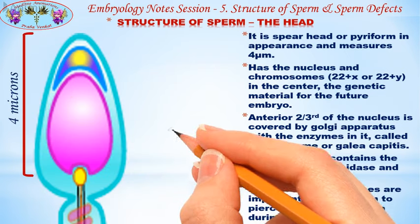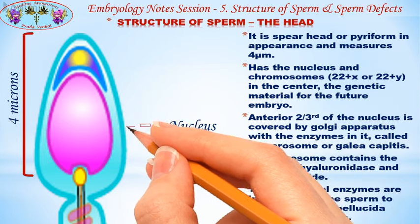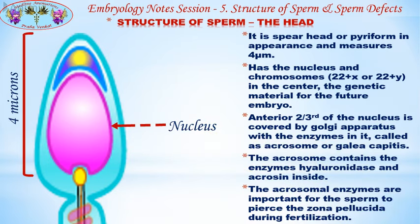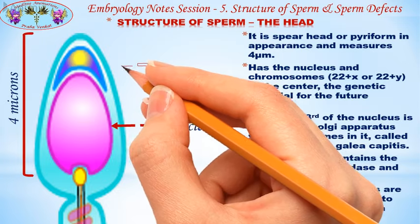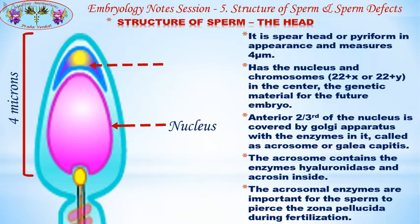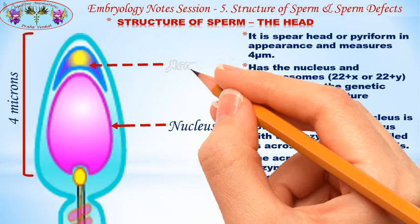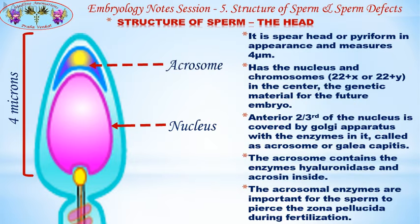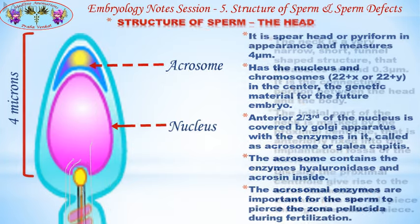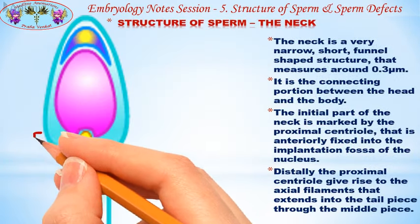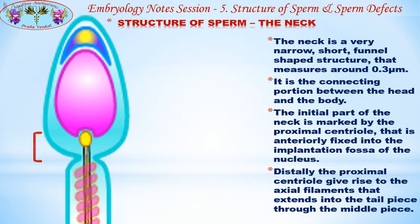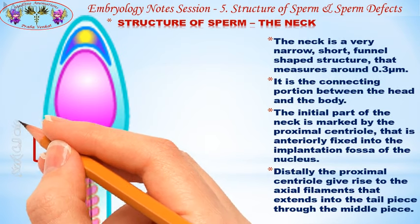The head contains the nucleus and chromosomes — the genetic material for the future embryo. The anterior two-thirds of the nucleus is covered by the Golgi apparatus with enzymes in it, called the acrosome or galea capitis. The acrosome contains the enzymes hyaluronidase and acrosin. These acrosomal enzymes are important for the sperm to pierce the zona pellucida during fertilization.